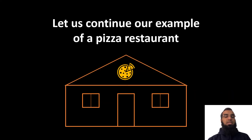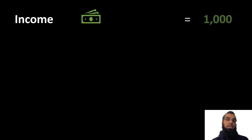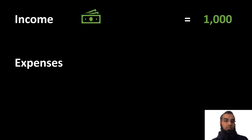To understand, let's continue with our example of a pizza restaurant. Say the income we have earned from the pizza restaurant is $1,000 — our customers have paid us $1,000 for pizzas. Now let's see what our expenses will be.